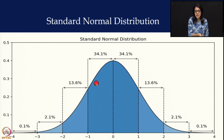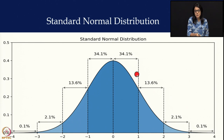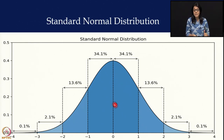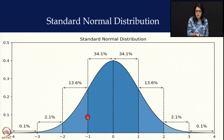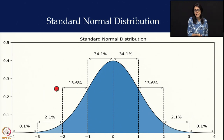Look at these numbers. From mean to plus one, 34.1 percent of children fall between 0 and plus 1, and from plus 1 to plus 2, 13.6 percent of children fall — those children are taller or bigger than the average mean. Below average, 34.1 percent of children fall from mean to minus 1, and then between minus 1 to minus 2 standard deviation, about 13.6 percent of children fall.